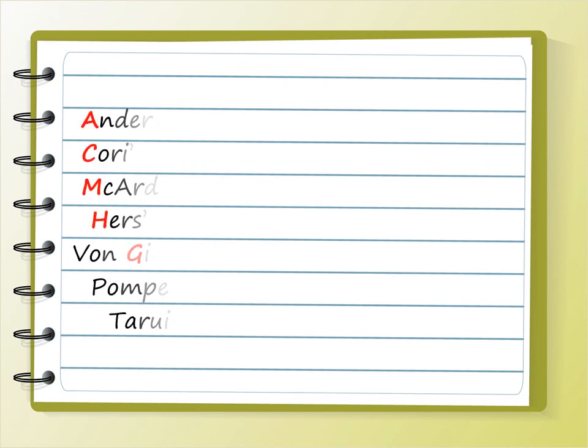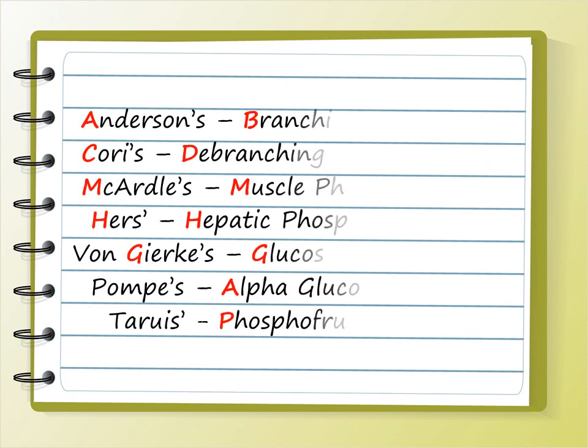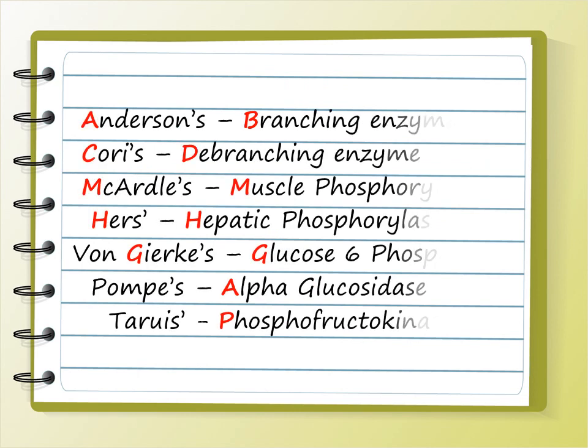Let's revise everything at once: Anderson is branching enzyme, Cori is debranching enzyme — ABCD. McArdle: M for M, muscle phosphorylase. Hers: H for H, hepatic phosphorylase. Von Gierke: glucose-6-phosphatase. Pompe: alpha-glucosidase. Tarui: phosphofructokinase. That's it — glycogen storage diseases, you don't have to revise again.